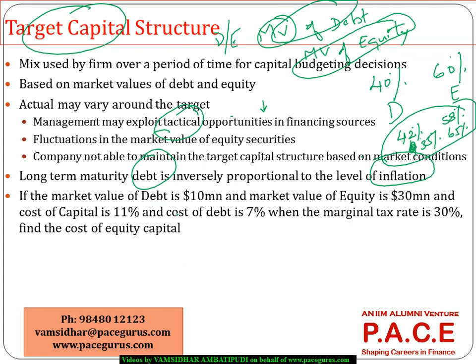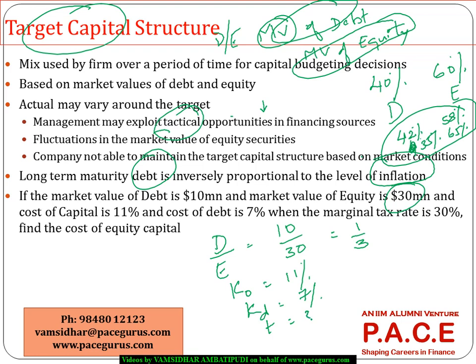Let's take another numerical. Market value of debt is 10 million, market value of equity is 30 million, so the debt-to-equity ratio is 1:3. Cost of capital is 11%, cost of debt is 7%, and tax rate is 30%. Using KE = KO + (D/E) × (KO − KD) × (1 − T), we can find the cost of equity under this scenario.